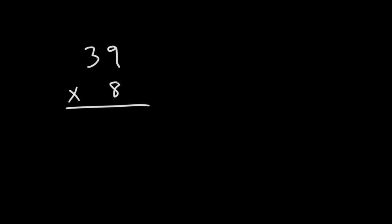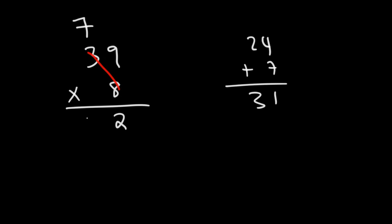What we need to do is multiply 8 by 9 first. 8 times 9 is 72, so we're going to write the 2 and then carry over the 7. Next we need to multiply 8 times 3. 8 times 3 is 24, and then you need to add 7 to 24. 24 plus 7 is 31, so the answer for this example is 312.